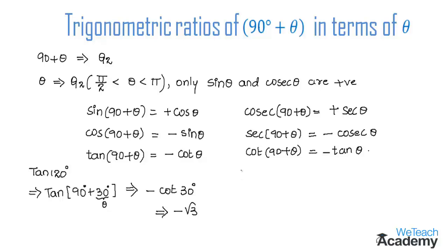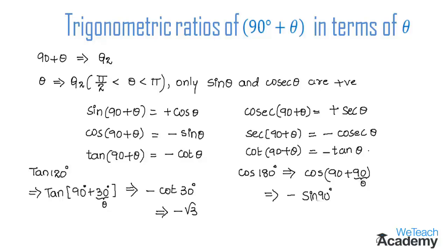Next, find the value of cos 180°. We write cos 180° as cos(90° + 90°), which is in the form cos(90° + θ) = minus sin θ. Here θ = 90°, so we get minus sin 90° = minus 1. Therefore, cos 180° equals minus 1.